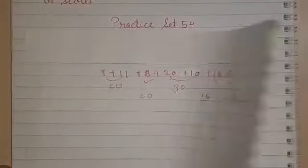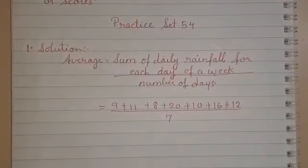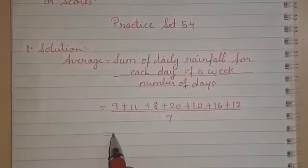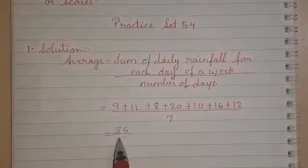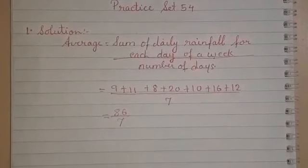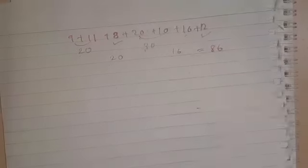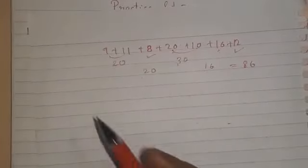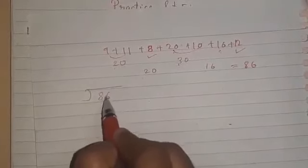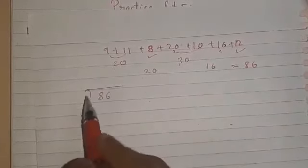So we write the addition equals to 86 upon 7, that is 86 divided by 7. Again on the rough page, we are going to do the division: 86 divided by 7.